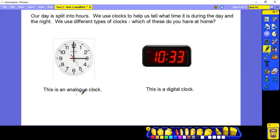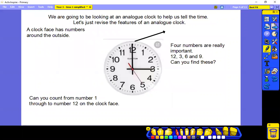This is what we call an analogue clock. And this is a digital clock. So we're going to be looking at an analogue clock to help us tell the time. So let's just revise the features of an analogue clock.